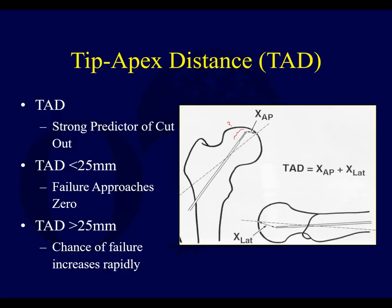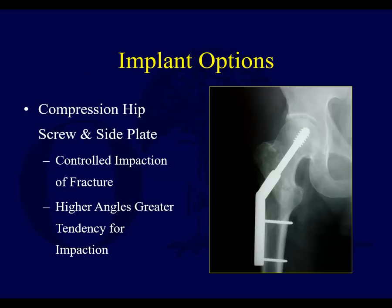Know what that distance is so you can estimate your tip apex distance intraoperatively. We want the combined tip apex distance — the sum of the distance from the apex on the lateral and from the apex on the AP — to be less than 25 millimeters. When that combined distance is greater than 25 millimeters, the lag screw is more likely to cut out of the femoral head. You want to get the screw as center-center as possible. This was established by Dr. Baumgartner and is a commonly used, well-validated parameter.